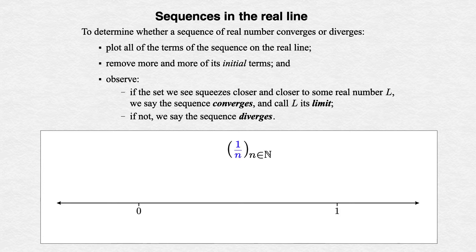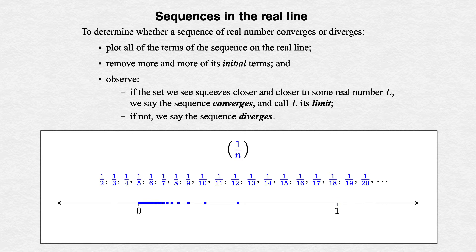For the sequence 1/n: 1, 1/2, 1/3, 1/4, 1/5, etc., as we remove more and more initial terms, the rest of the terms squeeze closer and closer to zero, so this sequence converges, and its limit is zero.